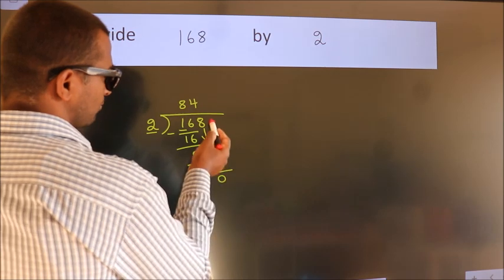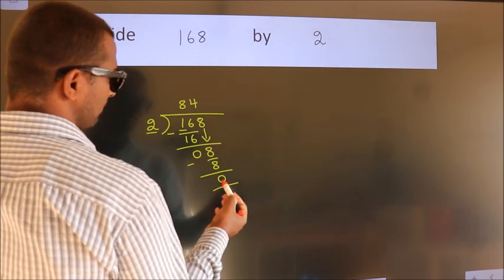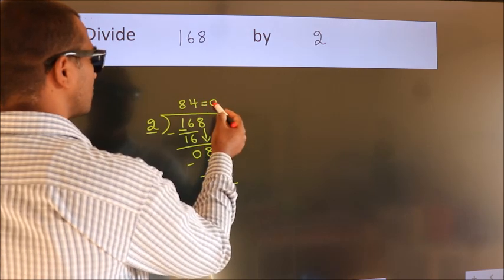After this, no more numbers to bring down and we got remainder 0. So this is our quotient.